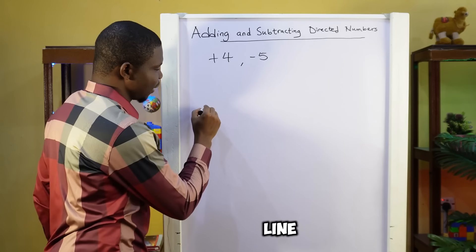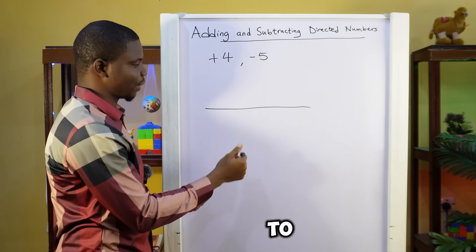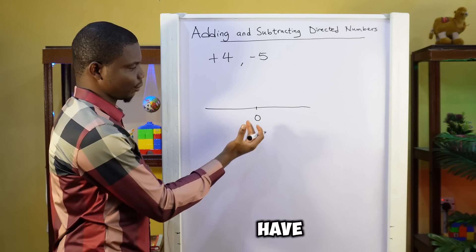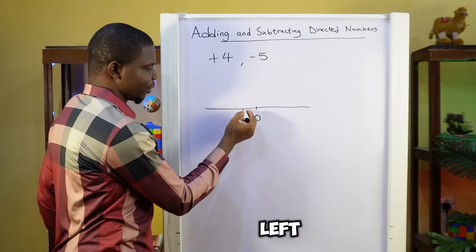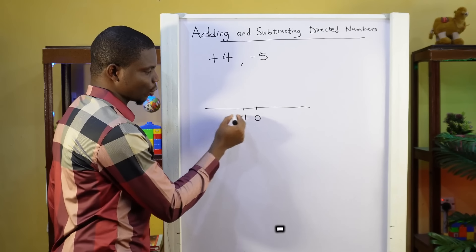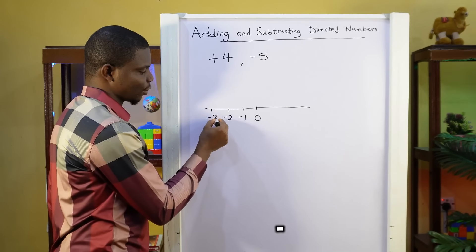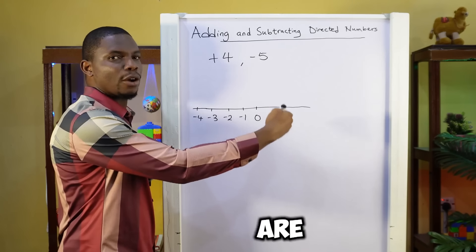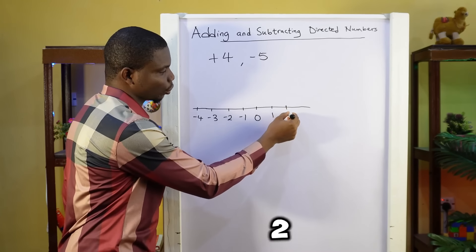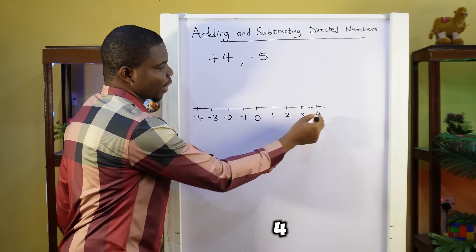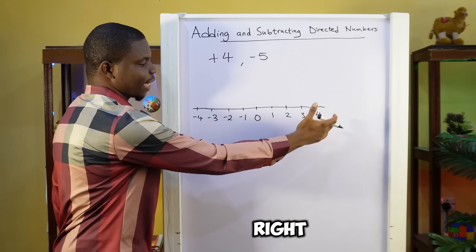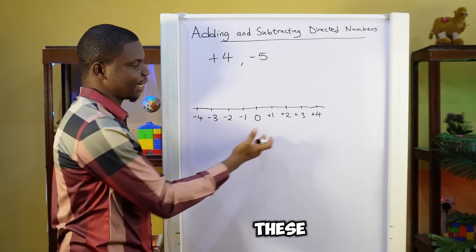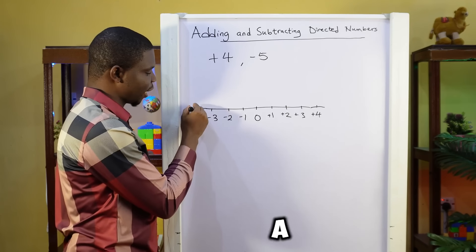If I have a line and I want to add numbers to this line, let me start with 0. Is 0 the smallest number that we have? No. We have numbers that are smaller than 0. Coming to the left of the number line, you would have minus 1, minus 2, minus 3, minus 4, and so on. And after 0, there are other bigger numbers like 1, 2, 3, 4, and so on. So to the right of 0, we have positive numbers. And to the left of 0, we have negative numbers.